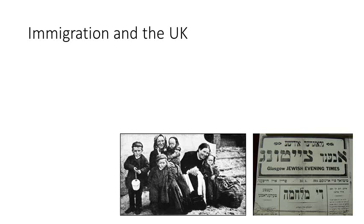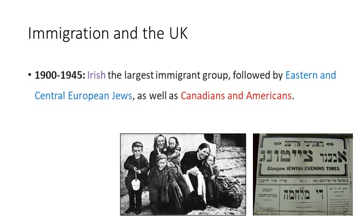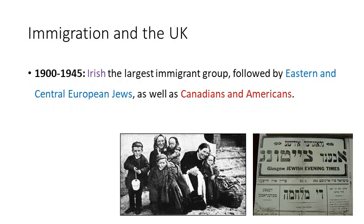The UK has a very interesting history when it comes to migration. Over the last thousand years we've seen many different groups from all over the world come and settle in the UK. Focusing on the last hundred years or so, from 1900 to 1945, generally the largest immigrant group coming to the United Kingdom were the Irish. It's worth remembering that at this point in time Ireland was part of the United Kingdom and the British Empire, so this was actually a form of almost internal migration.